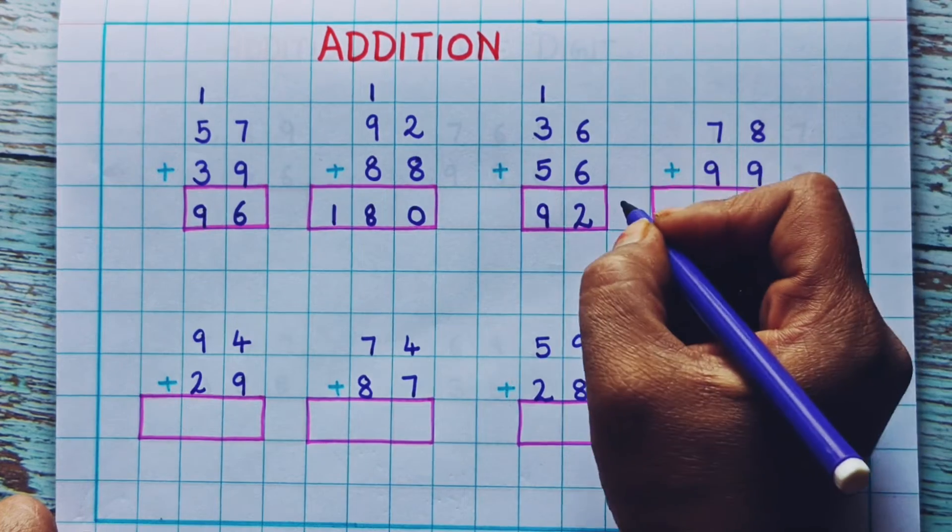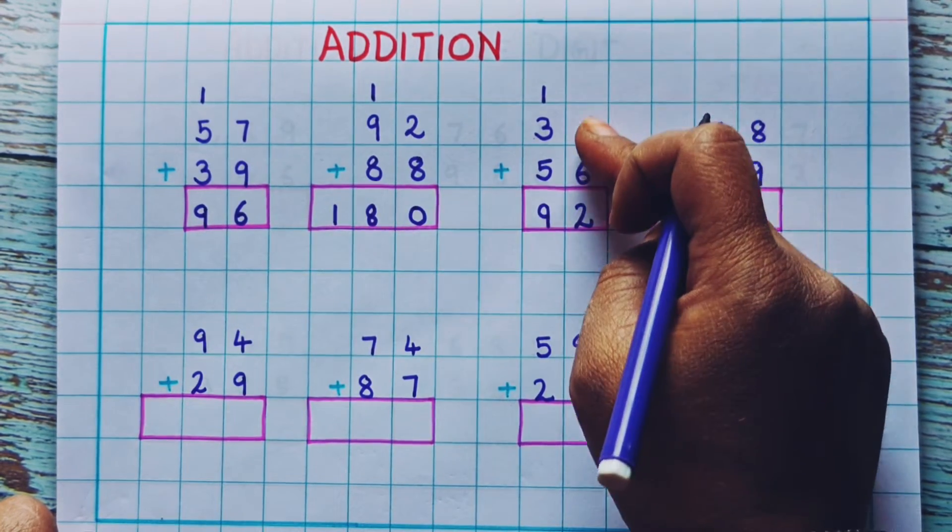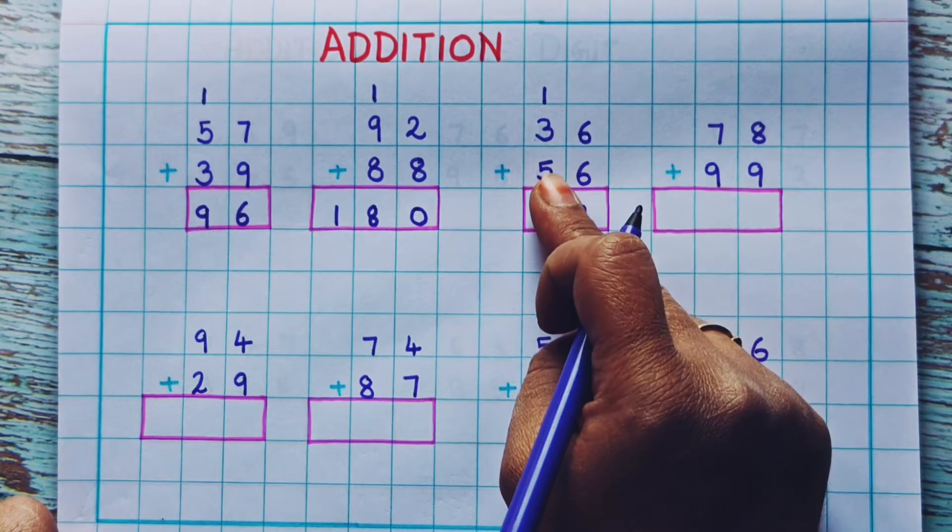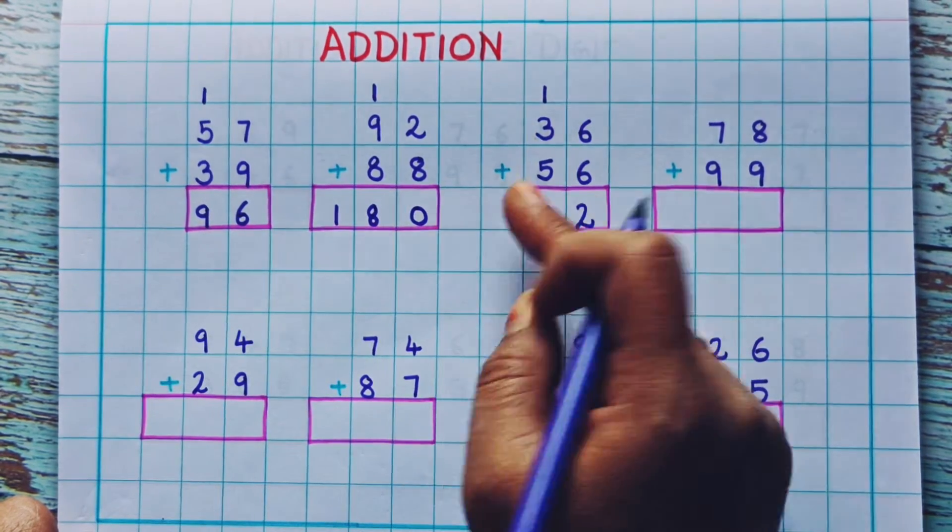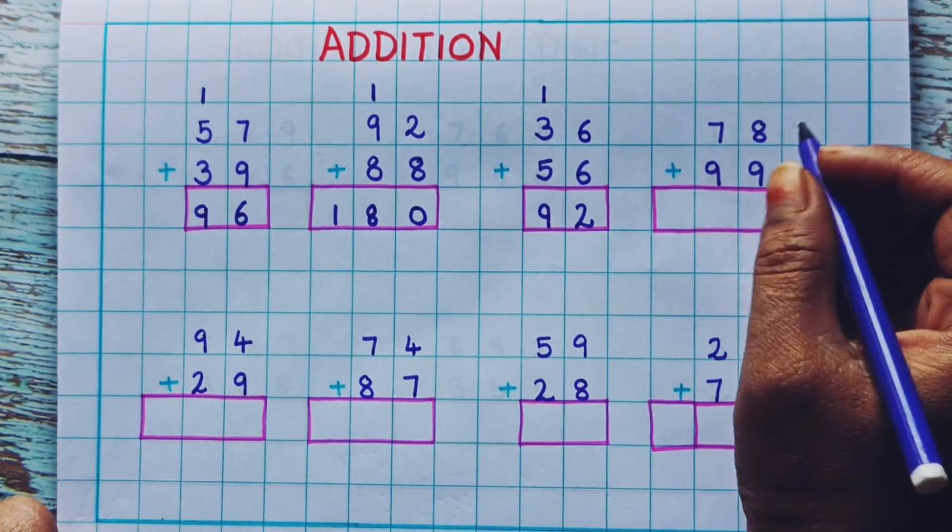I hope you are able to understand it. We start the addition from the ones place and then move towards the tens place and hundreds place. Now let's see the next one.